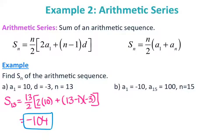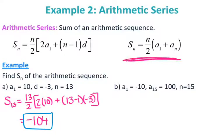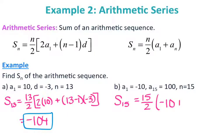For letter B, the first term is negative 10, the number of terms is 15, and I'm given the 15th term. So I have my first term, my last term, and the number of terms — I use the second formula. S15 equals 15 over 2 times the quantity (first term plus last term). Plugging into the calculator gives 675.